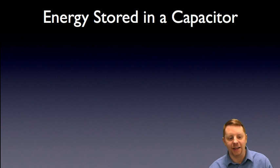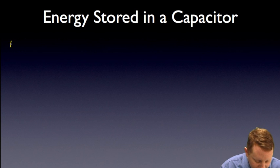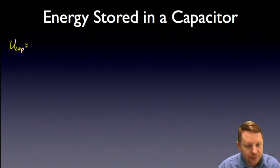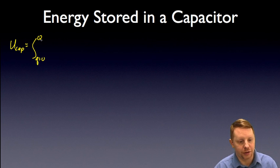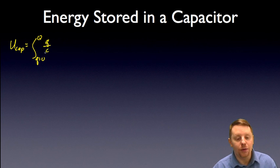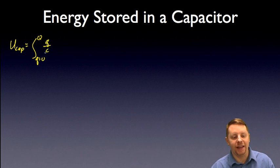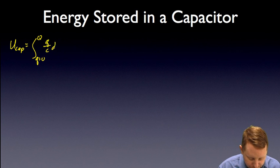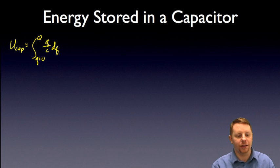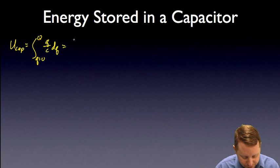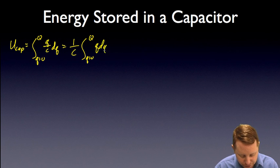So let's use that to find the energy stored in a capacitor. The potential energy stored in a capacitor is going to be the integral as we start from no charge all the way up to our total charge Q of Q over C — the work done in taking that charge from one plate to the other — over our little tiny bit of charge dQ. So we're going to evaluate that from Q equals zero all the way to our maximum capital Q. The capacitance is set, that's a constant, so this will be one over the capacitance times the integral from Q equals zero to capital Q of Q dQ.